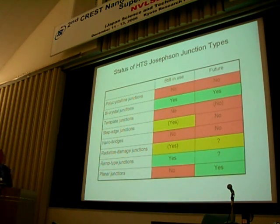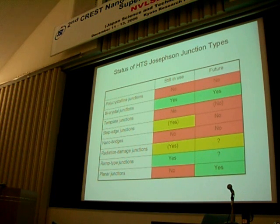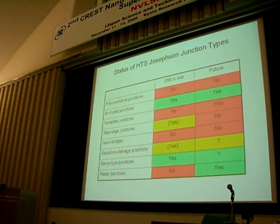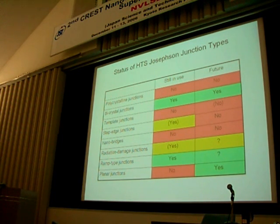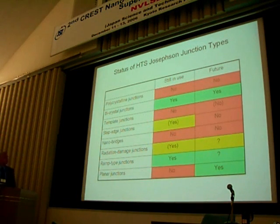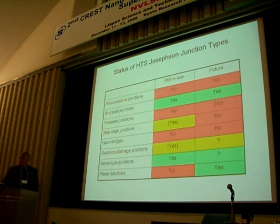So, what is the status? Polycrystalline junctions? No. Bicrystalline? Yes. Template junctions? No. Maybe — there's a possibility with the cerium oxide. Step-edge nanobridges? Forget about it. Radiation damage: if lithography develops further as it currently is doing, I think there might be a chance to use it, but we're still talking about lithography in the nanometer range needing to be a factor of 10 to 100 better in edge resolution. Ramp-type junctions: it depends. Planar junctions, I think, have a future — this future depends much more on how much you invest in such development than on whether it's possible at all.